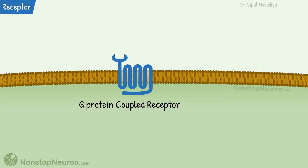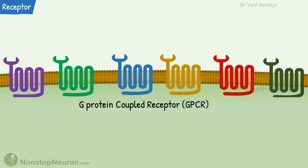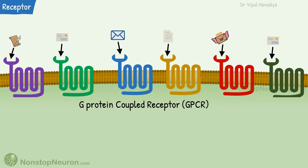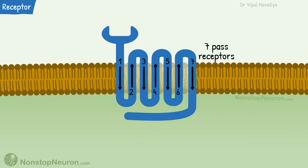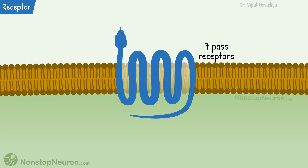G-protein coupled receptor, or GPCR in short, is the largest family of cell surface receptors. They mediate responses to a wide range of signal molecules. They are transmembrane proteins with 7 transmembrane segments. Because of this, they are also called 7-pass receptors. This zigzag arrangement is like a snake, so they are also called serpentine receptors.